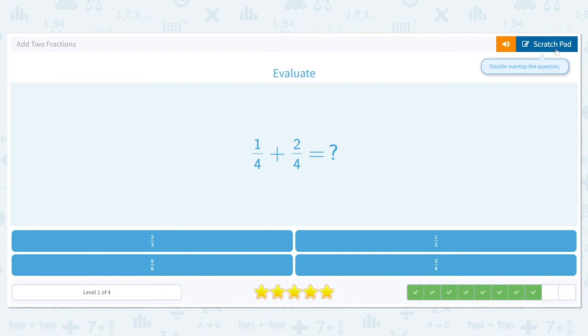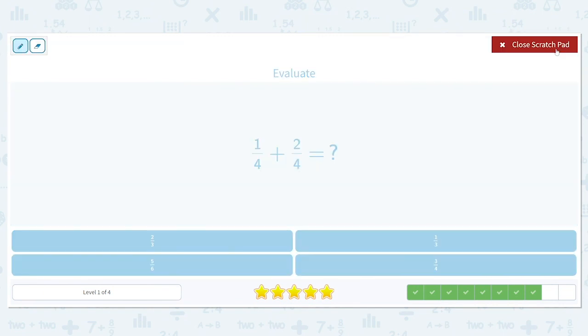One fourth plus two fourths. Denominators are the same. We're going to add one plus two to give us three, three fourths, and we've got that answer choice.